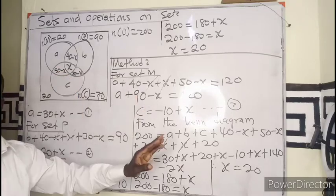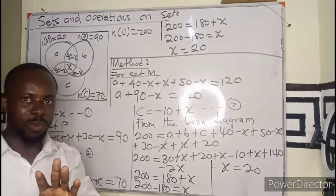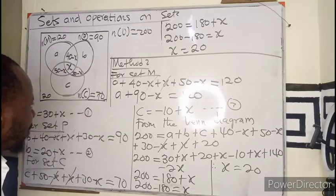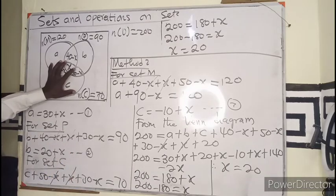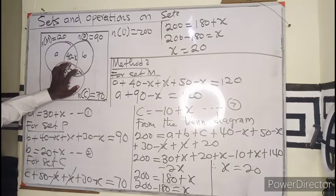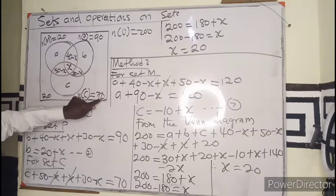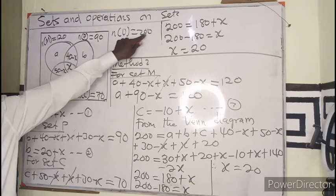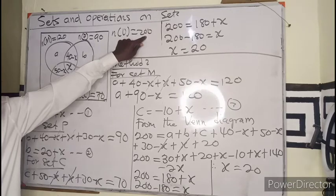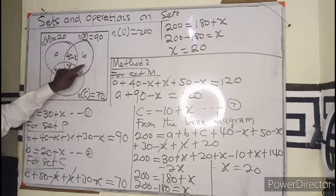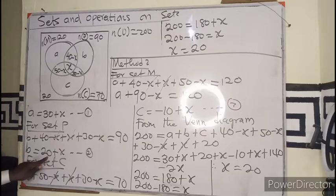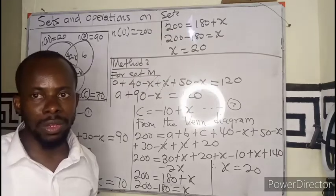There is a third method. With the time we've already spent — about 20 minutes — I will only give an insight. You can cover one of the circles, such as C, which has 70. Then 70 plus A plus the remaining regions equals 200. Substituting the known values of A and B, you again get X equals 20.